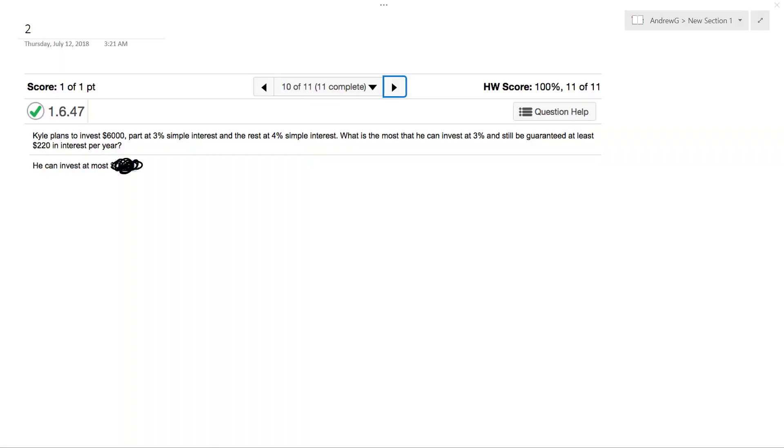So Kyle plans to invest $6,000, part at 3% simple interest and the other at 4%. What's the most you can invest at 3% to be guaranteed at least $220 a year? I mean it's greater than or equal to $220, but we'll just set it to $220 for the minimum.